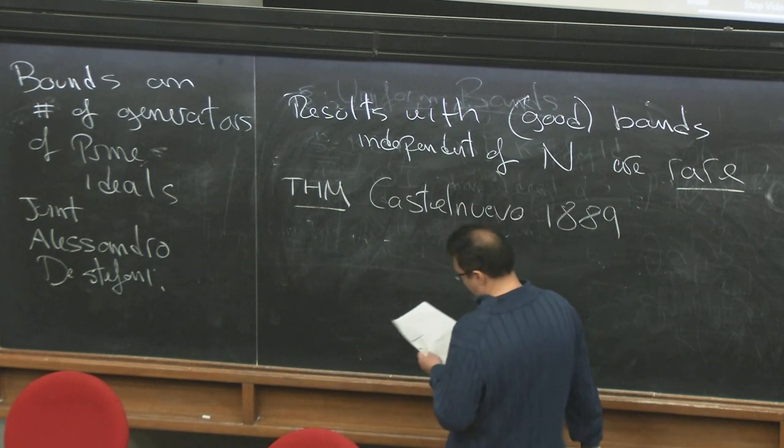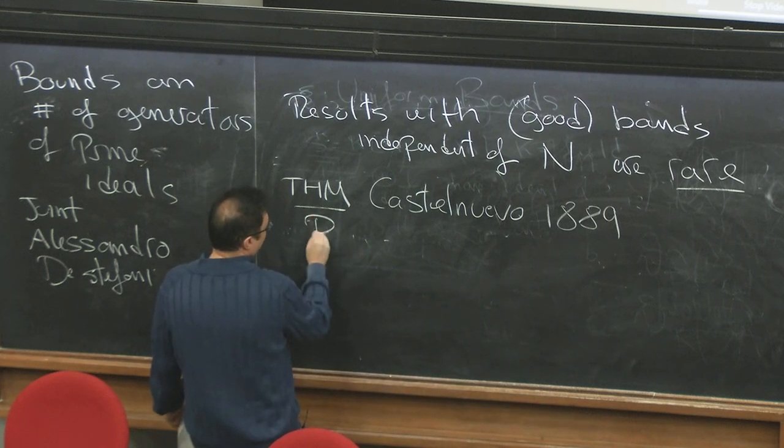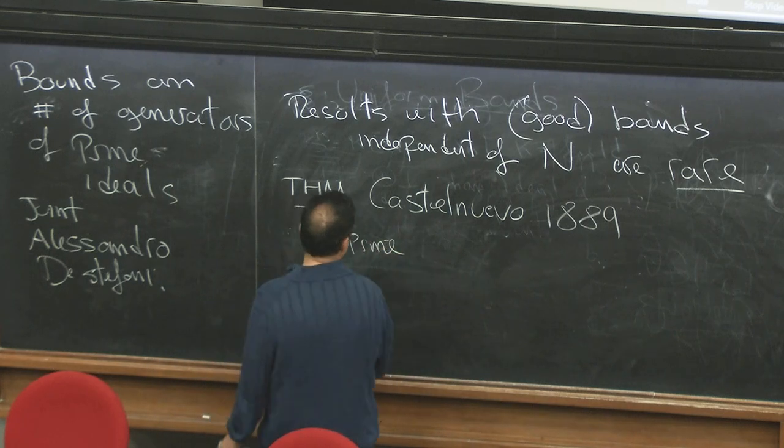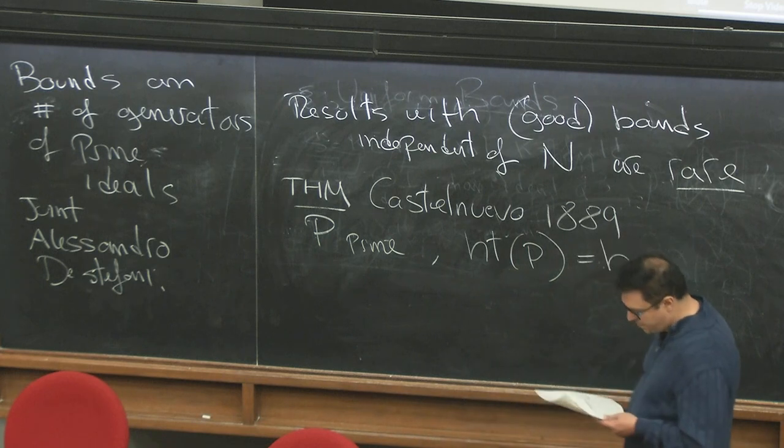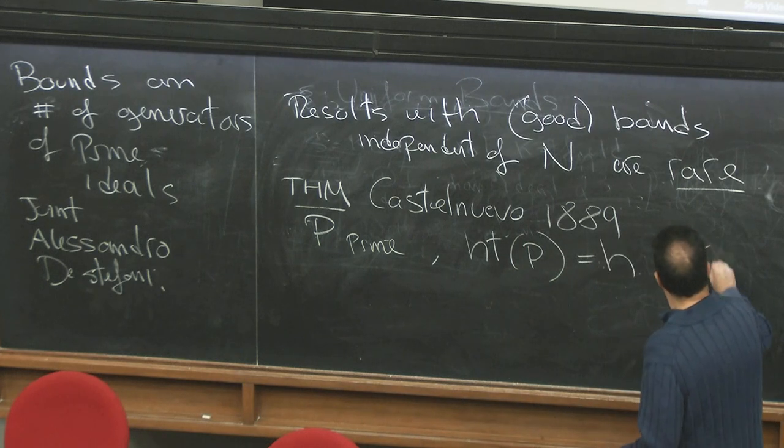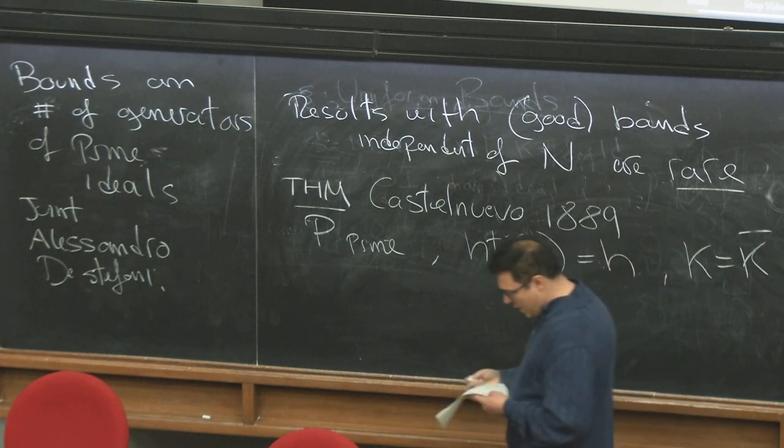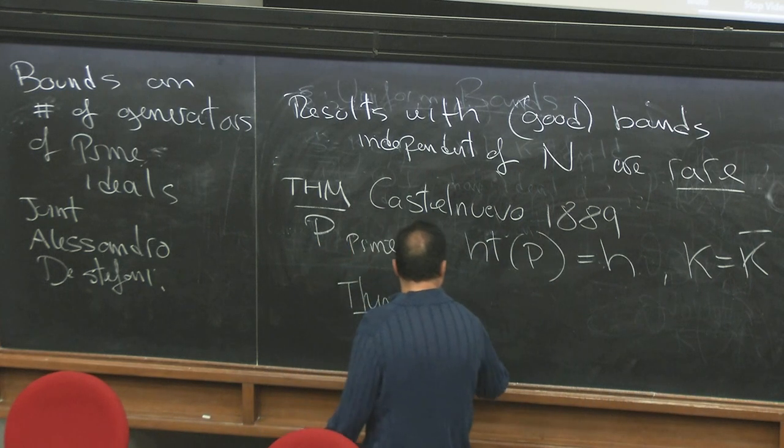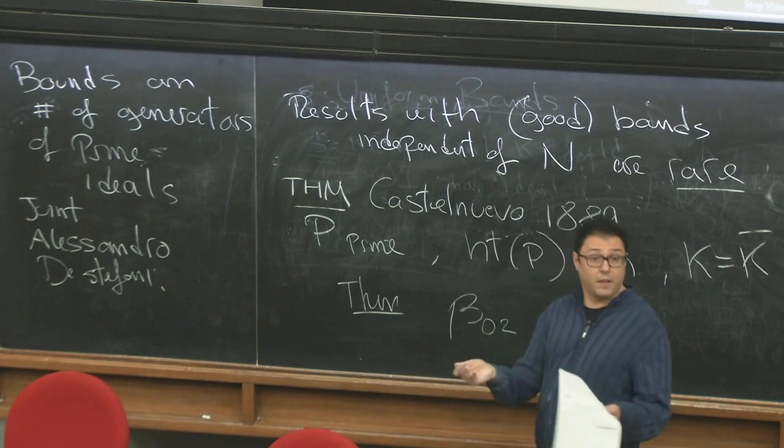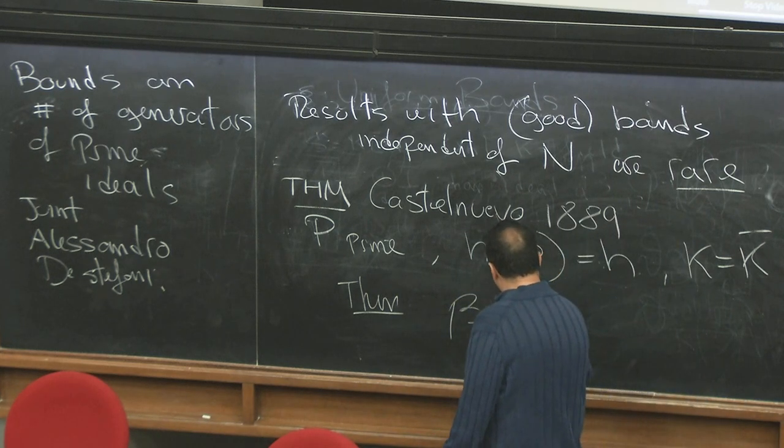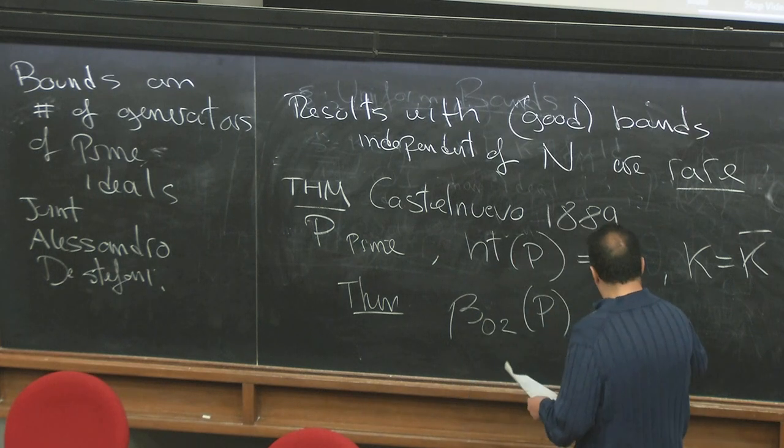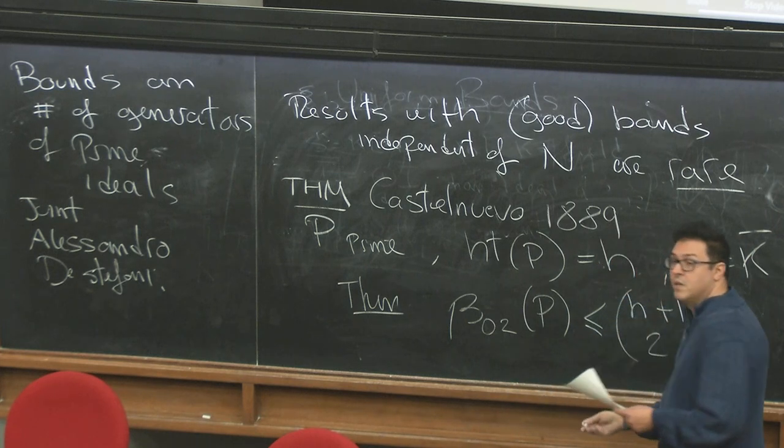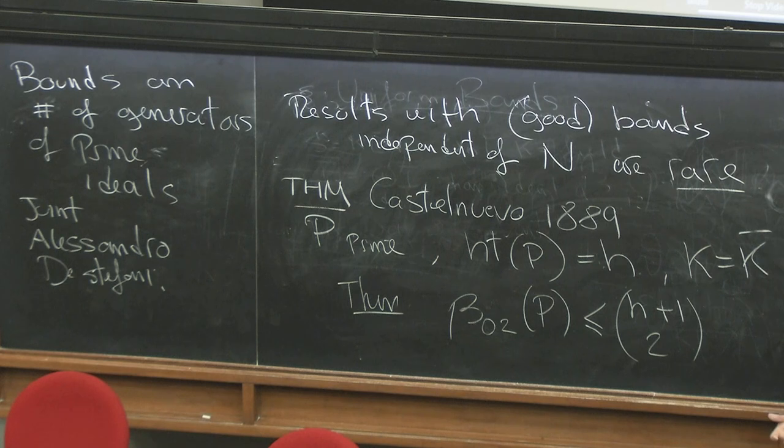1889, which says the following. If you start with a prime, so same data as before, P prime, I'm going to fix the height of the prime, say let's call it h, and then I want the fact that the field is algebraically closed. Then what happened? Then the number of minimal generators that are quadrics in your prime ideal, so P_02 of the prime, how many quadrics you have among the generators, is bounded above by a nice thing: h plus one choose two. No mention of number of variables whatsoever. That's why it's remarkable.